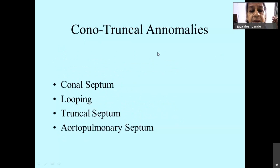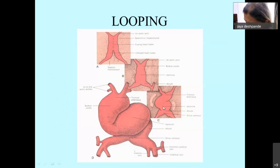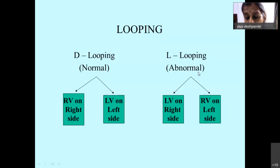Conotruncal anomalies involve the conal septum, the process of looping, the truncal septum, and the aortopulmonary septum. The heart is a straight tube during development; it loops to the right side, giving the right ventricle on the right and left ventricle on the left — this is normal d-looping. For some reason looping may happen on the left side, which is abnormal, resulting in the left ventricle on the right side and right ventricle on the left side.